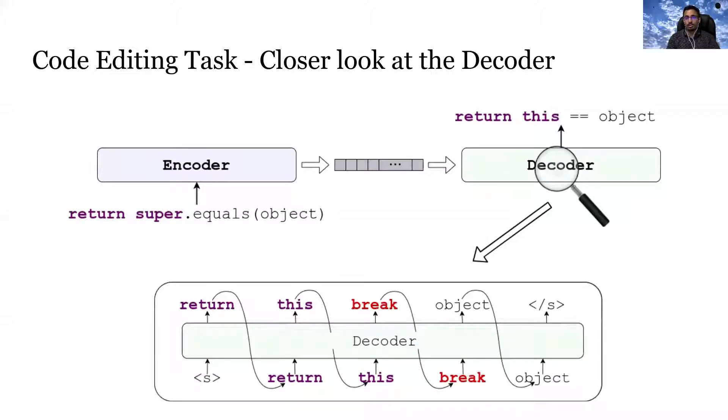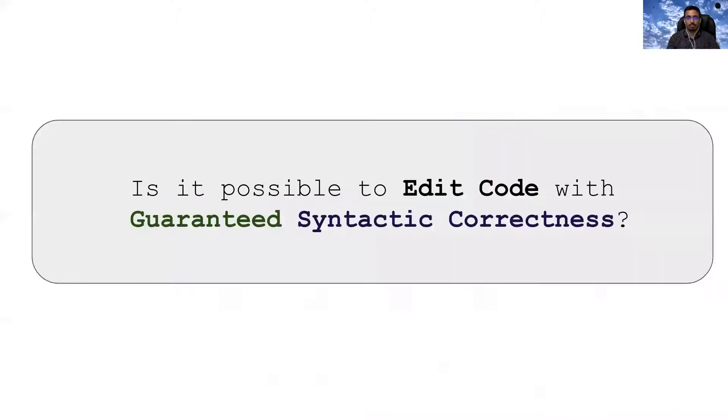However, such treatment would cause certain problems. To understand the problem, let us put a closer look at how the decoder generates the edited code. Since the decoder we are talking about is a sequence-based decoder, it generates the code as a sequence of tokens. That is, it generates the code with one token at a time sequentially. However, there is always a chance that the decoder can generate one wrong token in a certain position. And that is the problem because one wrong token could make the whole edited code syntactically incorrect.